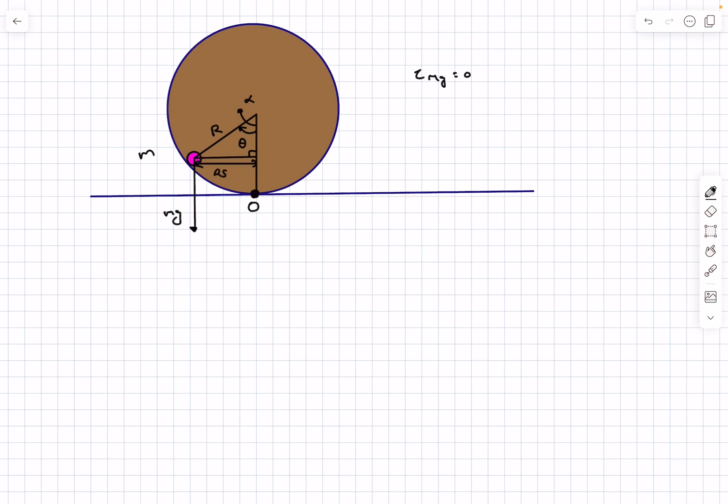So the torque of the composite body about the point O comes out to be minus mg times r sin theta. The reason for the minus sign is because the torque is trying to oppose alpha.